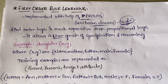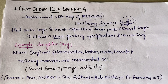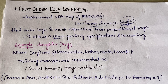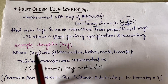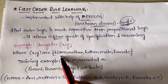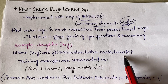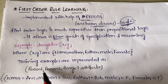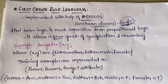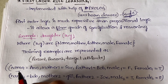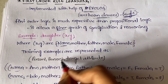For example, take the predicate daughter(x, y). To represent this relationship, we compare how it's done using propositional logic versus first order logic. Here x and y can be any values like mother, father, male, or female. The training examples are represented as person one, person two, and the target attribute.